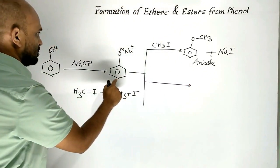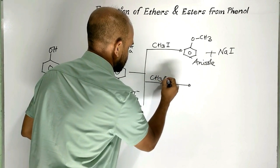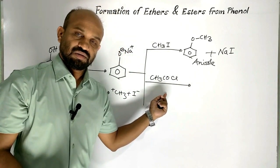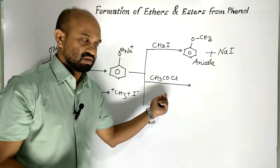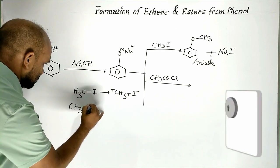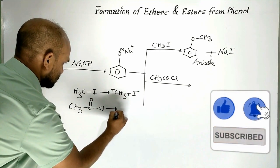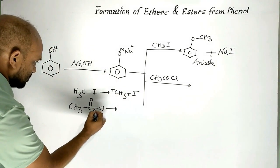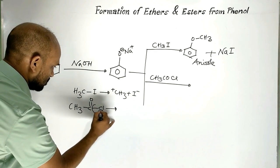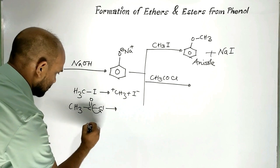When sodium phenolate is treated with ethanoyl chloride (acetyl chloride), the ethanoyl chloride breaks in this way. The carbon-chlorine bond undergoes heterolytic fission as a result.